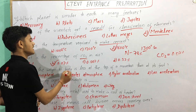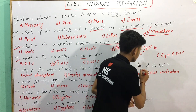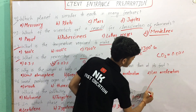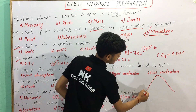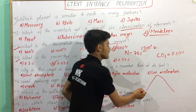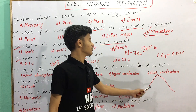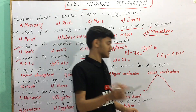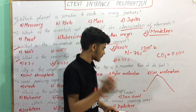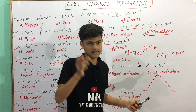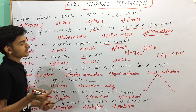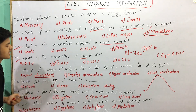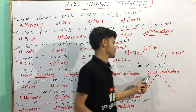The weight of the body is less at the top of the mountain than at its foot. The weight of the body is less at the top of the mountain. The highest mountain has high acceleration.